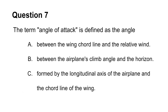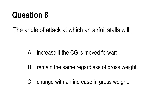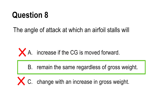The angle of attack is the angle between the wing's chord line and the relative wind. This makes choice A the answer to this question. This question wants to know the factors that change the angle of attack at which an aircraft stalls. From before, we know that the angle of attack at which stalls happen is the critical angle of attack. The critical angle of attack is independent of the weight and the location of the center of gravity. This excludes choices A and C, but makes B the answer to this question.